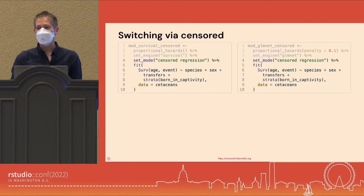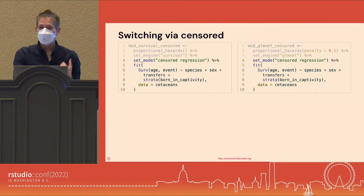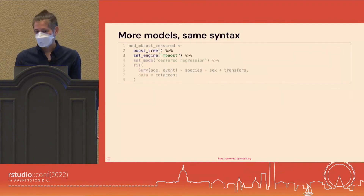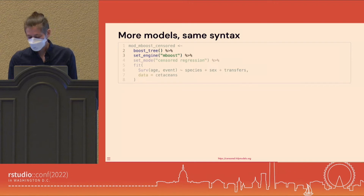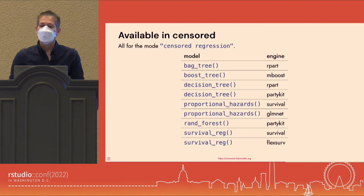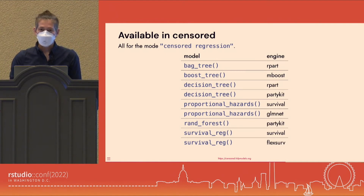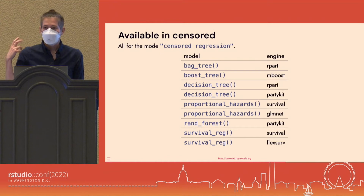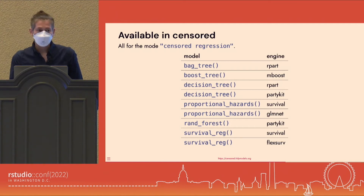The tagline is 'more models, same syntax.' You might swap out your model type for a boosted tree, set the engine to mboost, and you're ready to go. Censored covers censored regression with the survival_reg() function for parametric models, proportional_hazards() for semi-parametric models, and then tree-based models including decision trees, random forests, bag trees, and boosted trees. That covers the section on specifying and fitting.